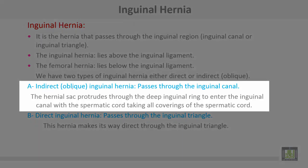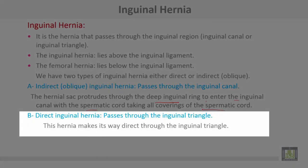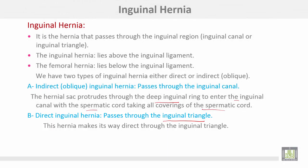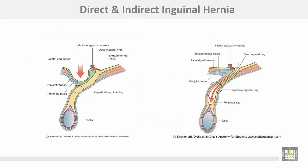Indirect or oblique hernia passes through the inguinal canal. The hernia sac protrudes through the deep inguinal ring to enter the inguinal canal with the spermatic cord, taking all coverings of the spermatic cord. Direct inguinal hernia passes through the inguinal triangle, also known as Hesselbach's triangle. The direct hernia makes its way directly through the inguinal triangle, while indirect hernia passes through the deep ring with the spermatic cord and descends to the scrotum.